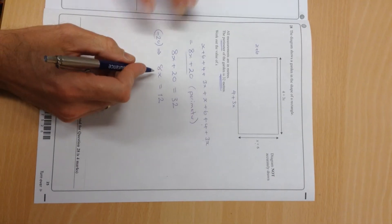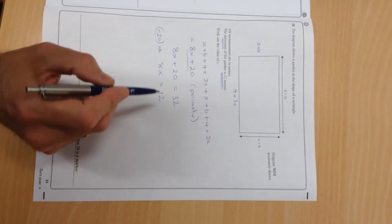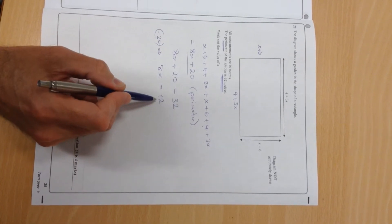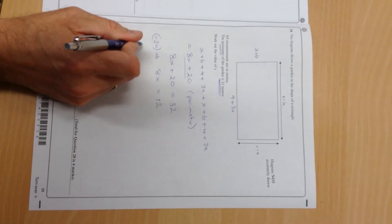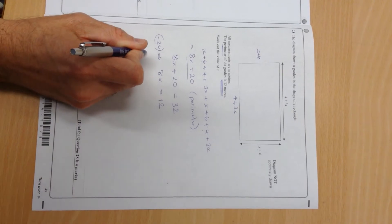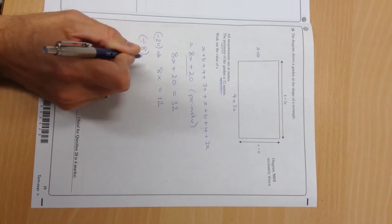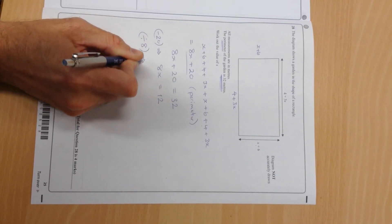And okay, 8x is 12. It's not particularly nice—it'd be better if that was 16 or 24, but it's not. But I can still do it because I know 8x is 12, so to get 1x I can just divide by 8.